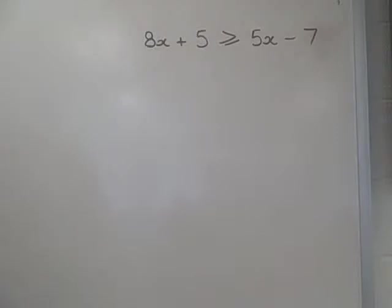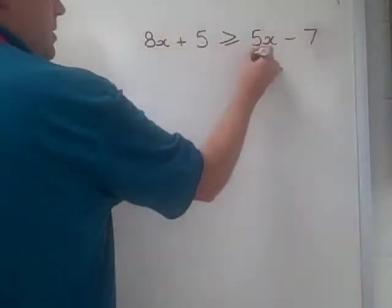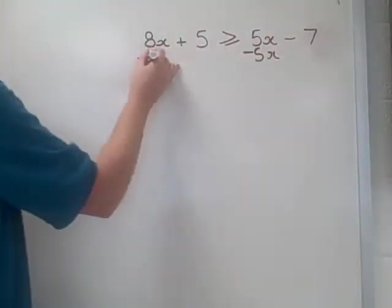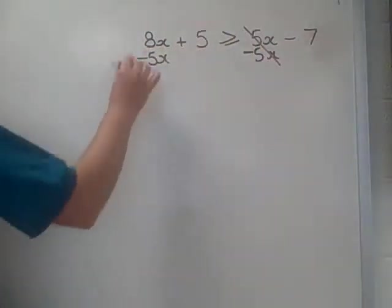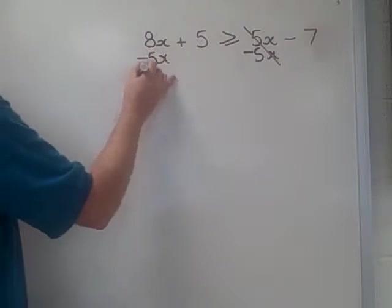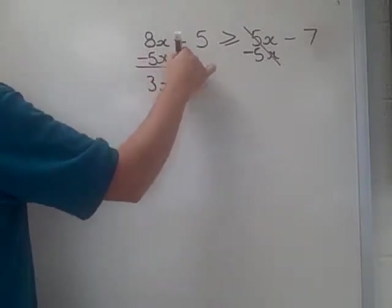Now, when it comes to solving inequalities, we're actually going to use the same sort of rules that we use when we're solving equations. We're going to try and bring all our x's to one side, bring all the terms to the other side. So this positive 5x here, if I subtract 5x from both sides, 5x take away 5x cancels, and then 8x take away 5x is going to give me 3x.